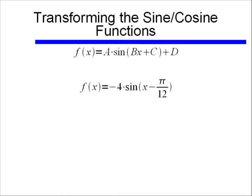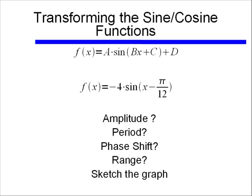Let's first take this example: f(x) equals negative 4 times sine of x minus π over 12. And what a question might ask is, what's the amplitude of this function? What's the period? Phase shift, range, and then lastly please sketch the graph.